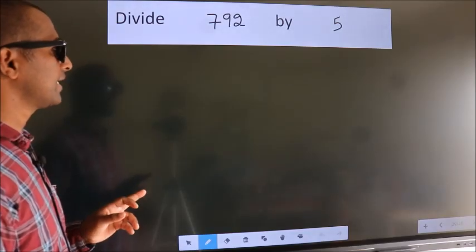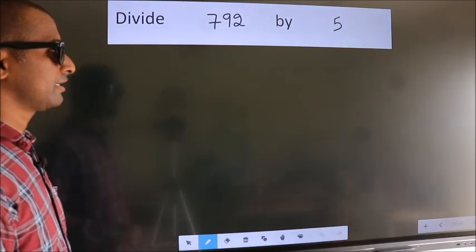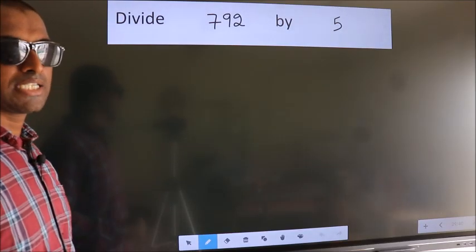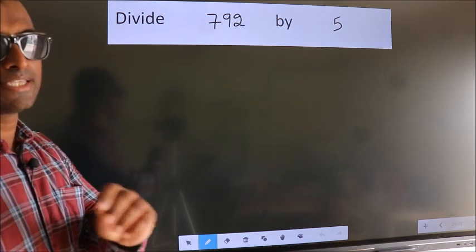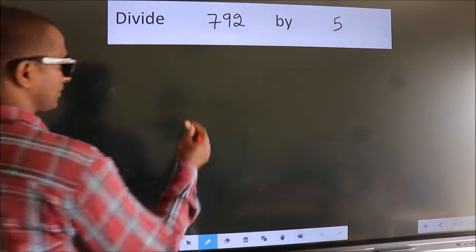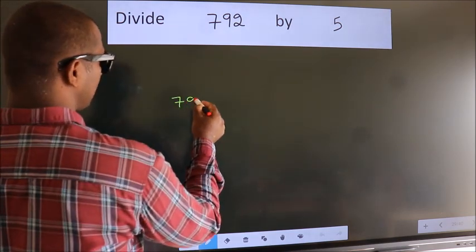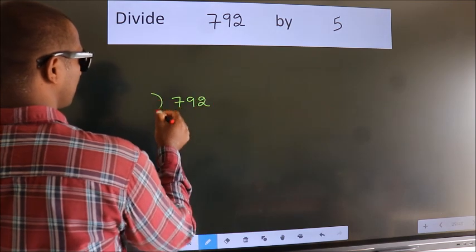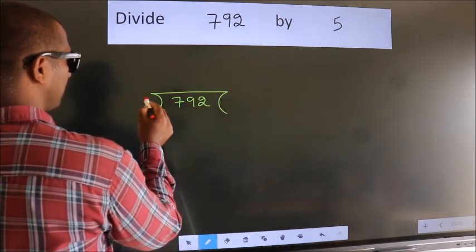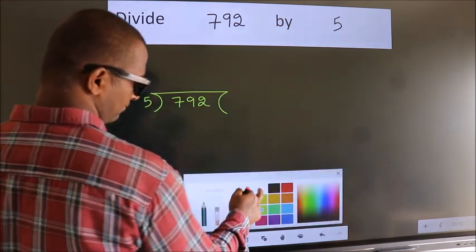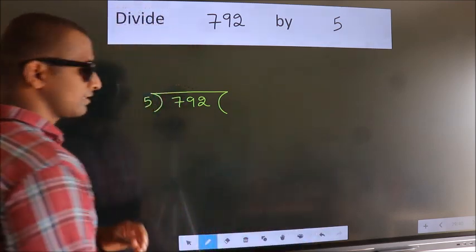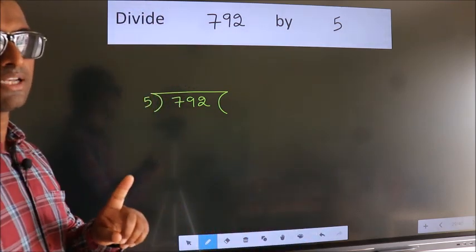Divide 792 by 5. To do this division, we should frame it in this way: 792 here, 5 here. This is step 1.